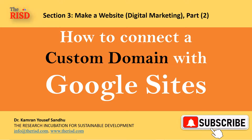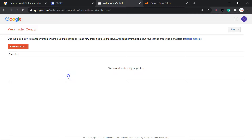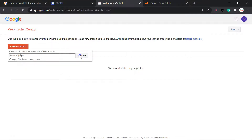There are three simple steps you have to follow. Step one is to check that you own your URL. For this, you have to click on the Google Webmasters verification page. I will click on it and land on this page — this is Webmaster Central. Here I will add a property like the domain name, then click continue.